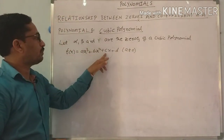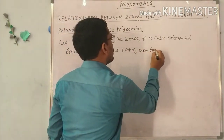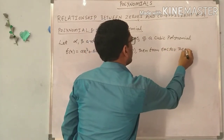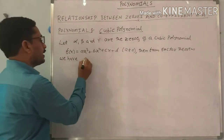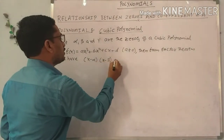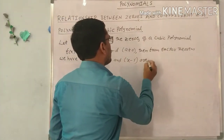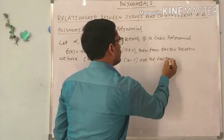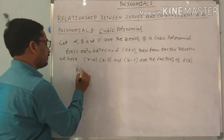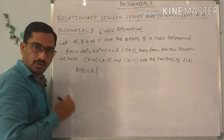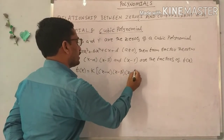Then from the factor theorem, X minus alpha, X minus beta, and X minus gamma are the factors of the cubic polynomial F of X. So F of X equals K into X minus alpha into X minus beta into X minus gamma, where K is some constant.